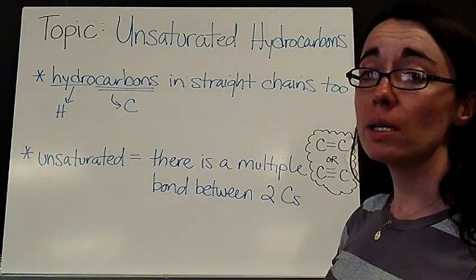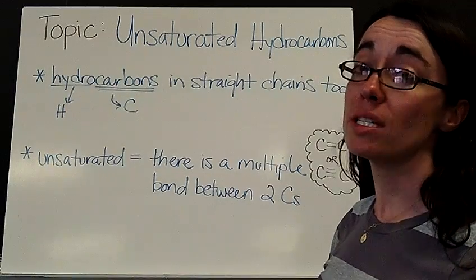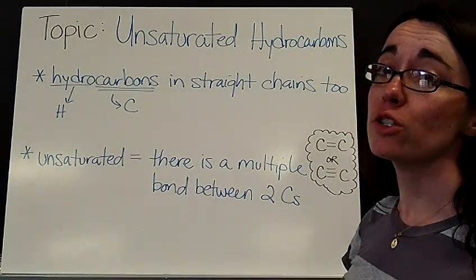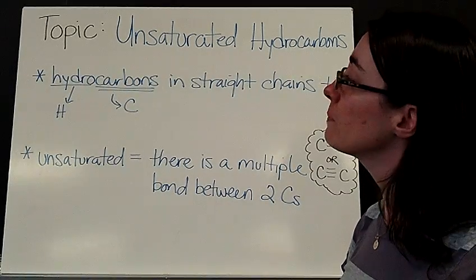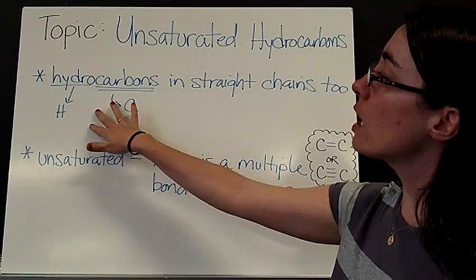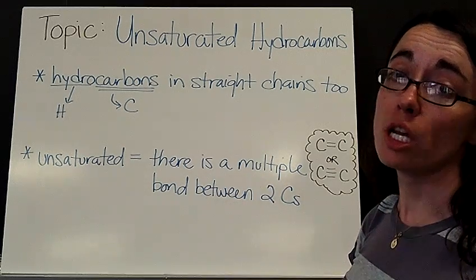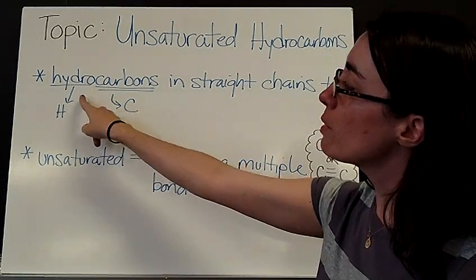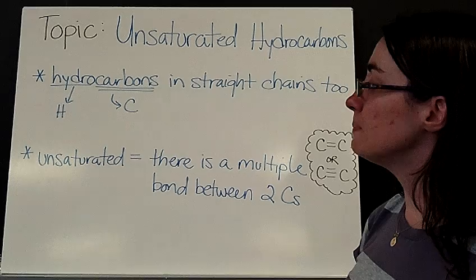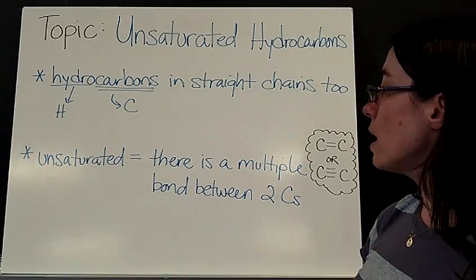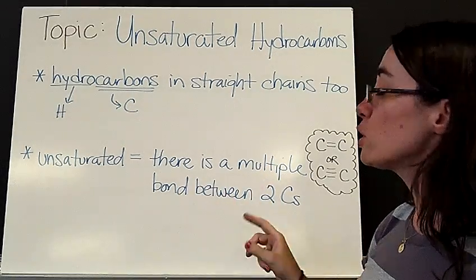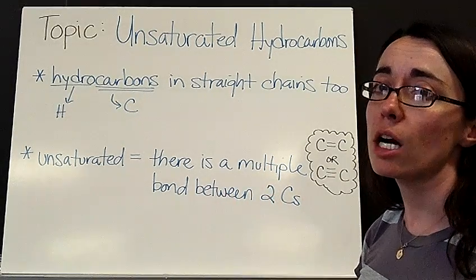Hey, let's talk about topic number two in organic chemistry. Today's topic is unsaturated hydrocarbons, and there are two families that fall under that category. We are still talking about hydrocarbons in straight chains, that is things made up of only hydrogen and carbon. But when I say unsaturated, what I'm telling you is that there's a multiple bond between two of the C's in that carbon chain.